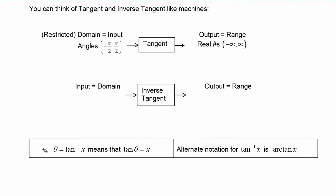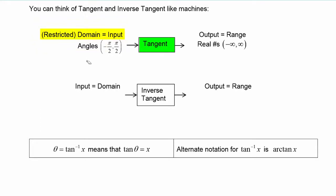Just like we've done with sine, cosine, inverse sine, and inverse cosine, you can think of tangent and inverse tangent like machines. For the machine called tangent, we know that we will input its restricted domain — that is, angles from negative pi over two to positive pi over two — and the machine will output its range, which is real numbers between negative infinity and positive infinity.